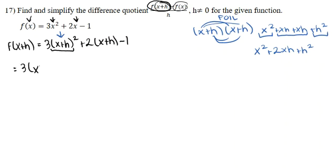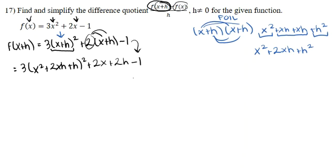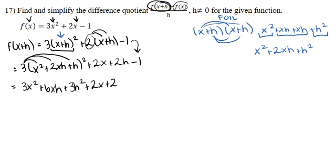Plugging in, we get 3 times (x squared plus 2xh plus h squared). Distributing the 2 to the second term gives plus 2x plus 2h, and negative 1 comes down unchanged. Distributing the 3 across all terms in the first set gives 3x squared plus 6xh plus 3h squared plus 2x plus 2h minus 1.